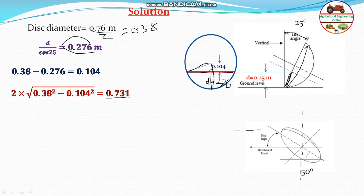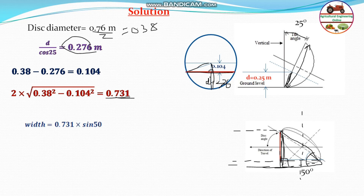The disc angle is the angle between the direction of travel and the face of the disc. To find the projected width, we use the right-angle triangle where the chord of 0.731 meters is the hypotenuse and the disc angle is 50 degrees. Therefore, the projected width equals 0.731 multiplied by sin 50 degrees, giving a width of 0.559 meters, which corresponds to option D.